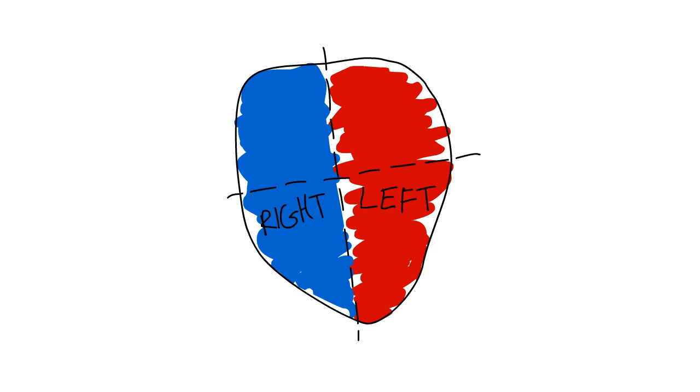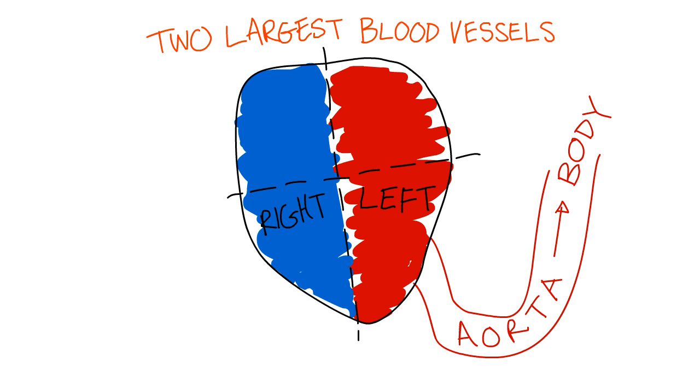So now let's talk about blood vessels. There are two large blood vessels that leave the heart. The aorta carries blood from the left heart to the body. The pulmonary artery carries blood from the right heart to the lungs.